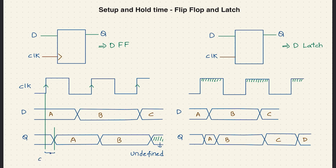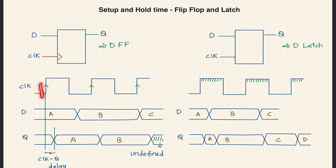From the clock edge to the output Q change, this is called clock-to-Q delay. Now let us define setup and hold time. For the output Q to be stable or to detect D, the input D should not change for some time before the clock edge and for some time after the clock edge. In this range, our input D should be stable — then only Q can detect D.